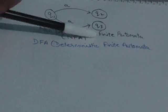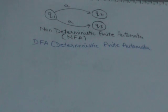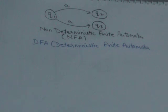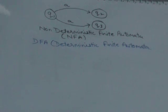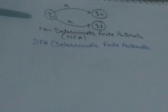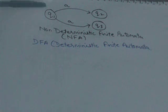The machine can either transit to state q3 or to state q2. It is not determined what the next state will be when we apply input symbol A to state q1. If a finite automata has such transitions, it is called a Non-Deterministic Finite Automata, also known as NFA. The automata we studied in previous tutorials were all DFA — they did not have such transitions.